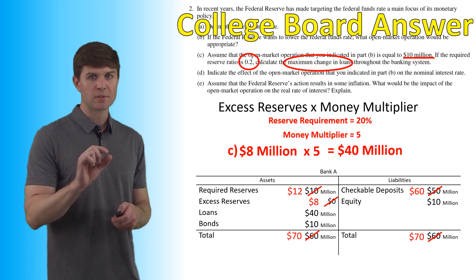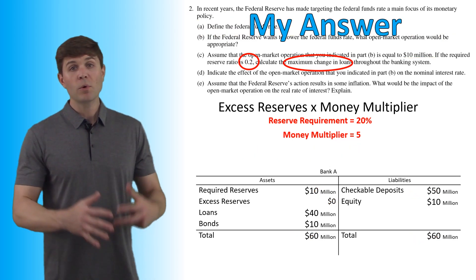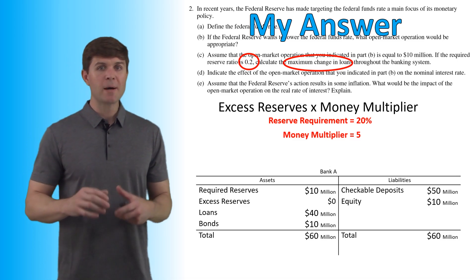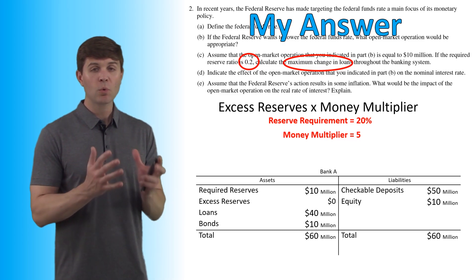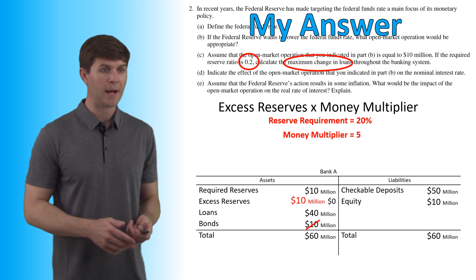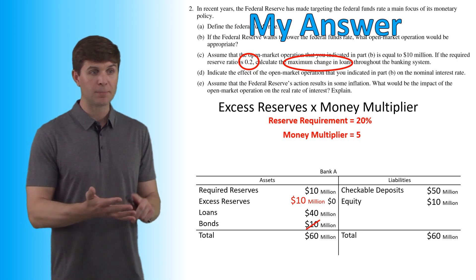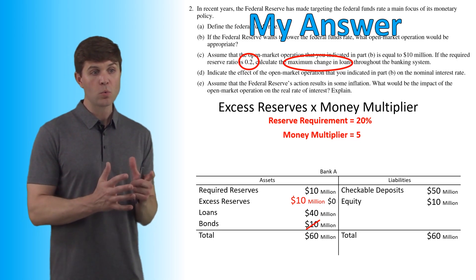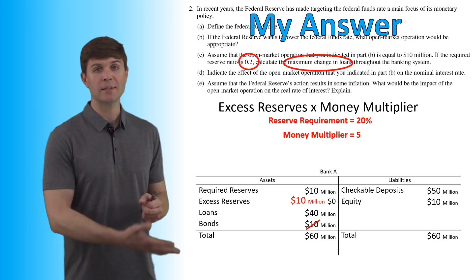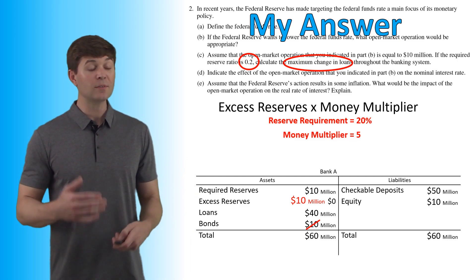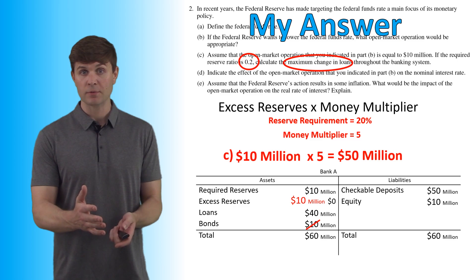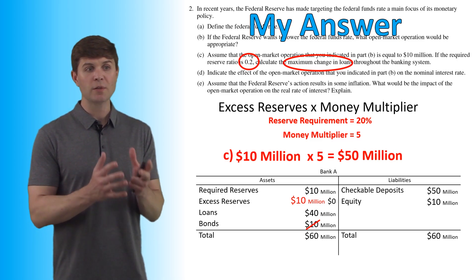But if you interpreted this question slightly differently, you may have come up with a different answer. My approach assumed all bonds were owned by a single bank — Bank A owns $10 million worth of bonds. If the Federal Reserve bought those bonds, nothing changes on the balance sheet except bonds become excess reserves. The bank now owns $10 million in cash instead of bonds, and they'll loan it all out. That $10 million multiplied by the money multiplier of 5 equals $50 million.